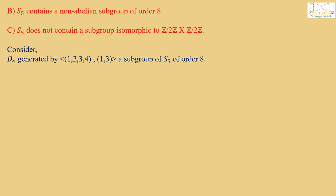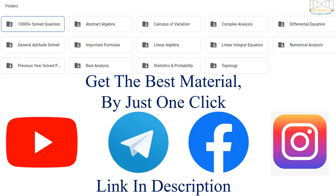Consider D4 generated by (1234), (13), a subgroup of S5 of order 8. Here D4 is non-abelian, we know that. Therefore B is also true. And as this is a question of Part B, only one option is correct, and we eliminated three options by proving them true. Therefore C is false. Therefore the answer is option C.